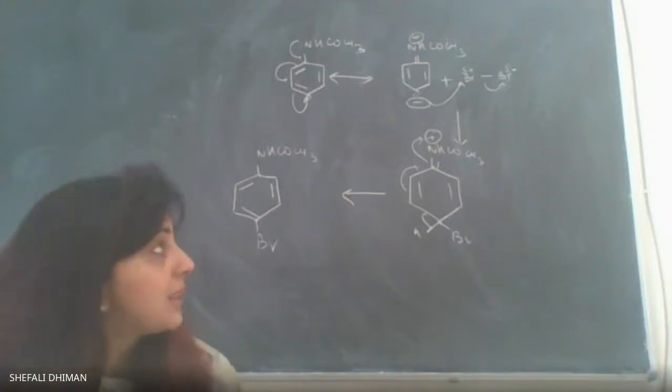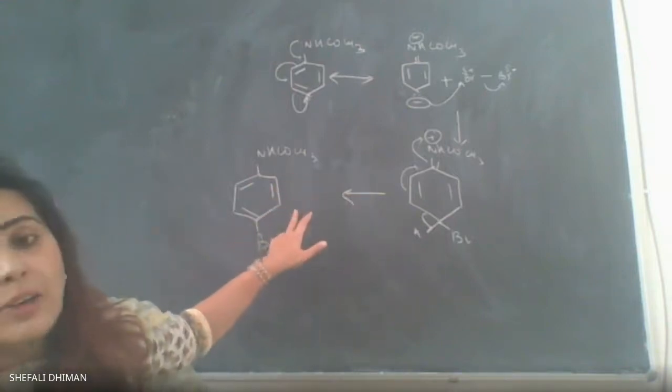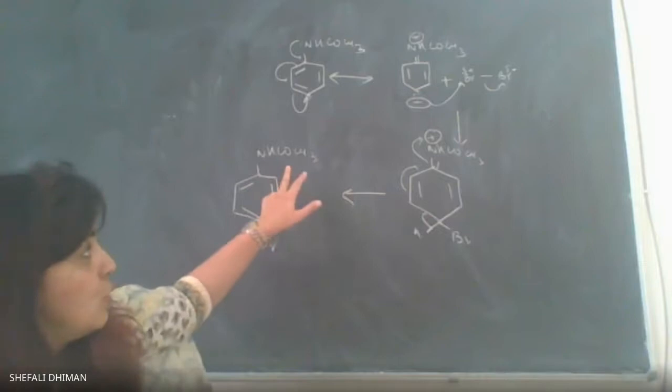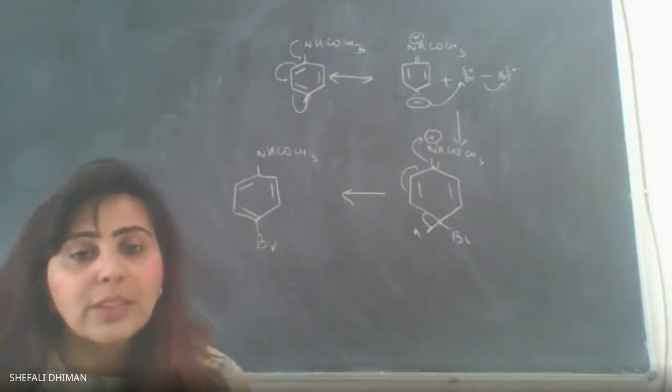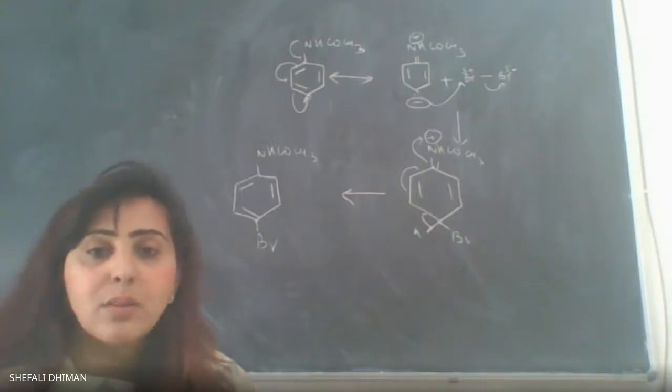You would end up with bromination at positions 2, 4, 6. I don't want all three positions to be brominated, but I want mono substituted products.